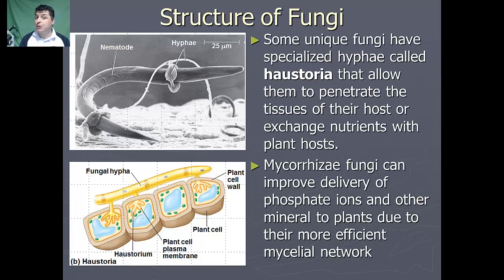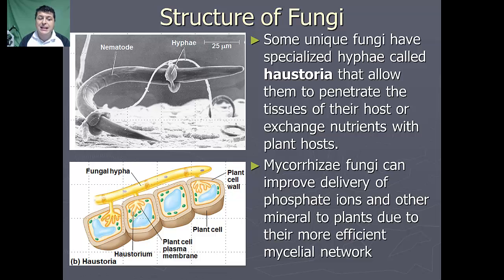Some unique fungi have specialized hyphae called haustoria, which allow them to penetrate the tissues of their host or maybe even exchange nutrients with their plant hosts. For example, the mycorrhizae fungi can improve the delivery of phosphate ions and other minerals to a plant because the mycorrhizae and the mycelium they have allows them to absorb much more phosphorus from their environment and then share that with their plant hosts using their haustoria.